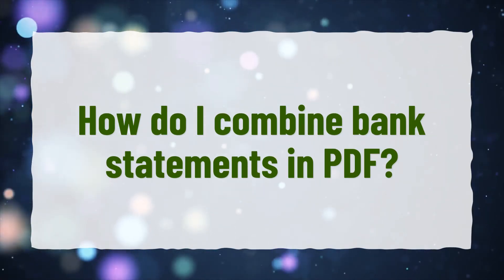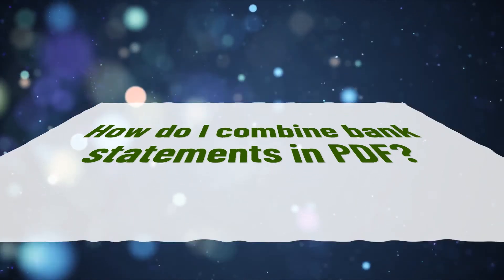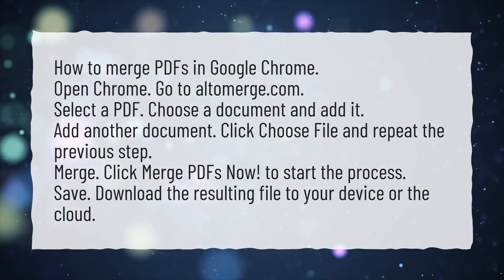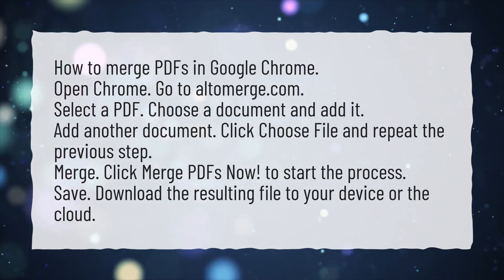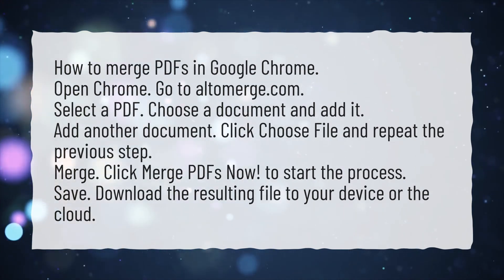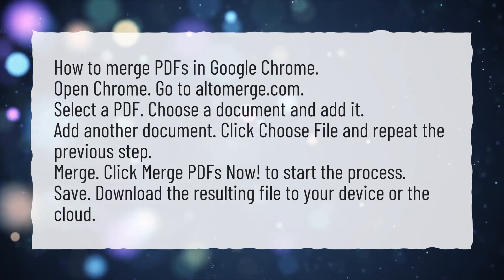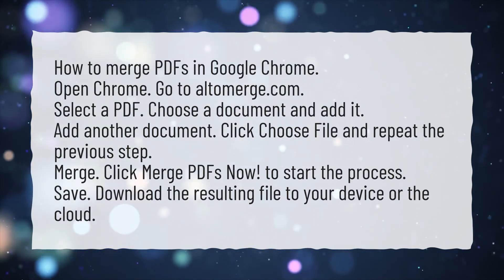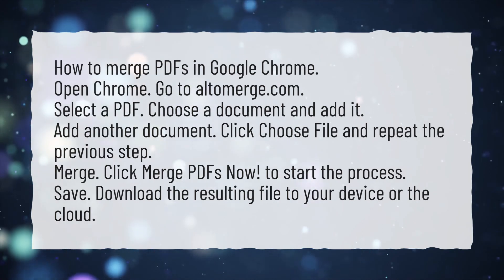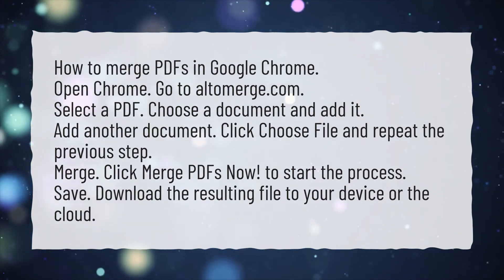How do I combine bank statements in PDF? How to merge PDFs in Google Chrome: Open Chrome, go to altimerge.com, select a PDF, choose a document and add it, add another document by clicking Choose File and repeating the previous step, then click Merge PDFs Now to start the process. Save and download the resulting file to your device or the cloud.